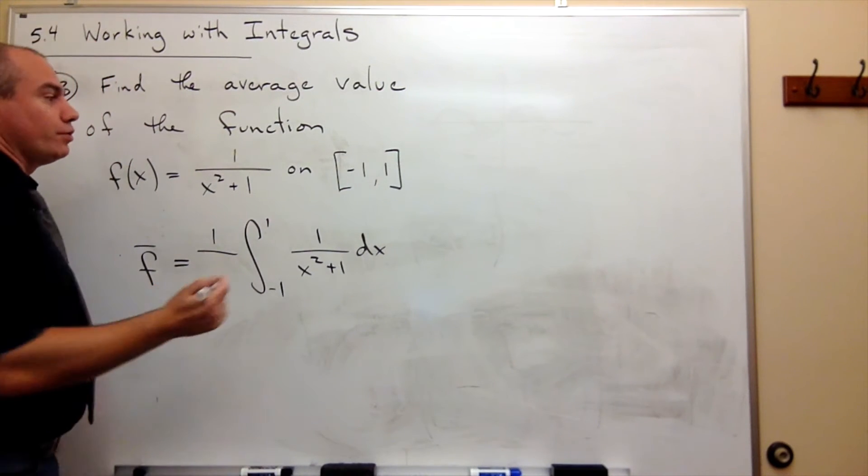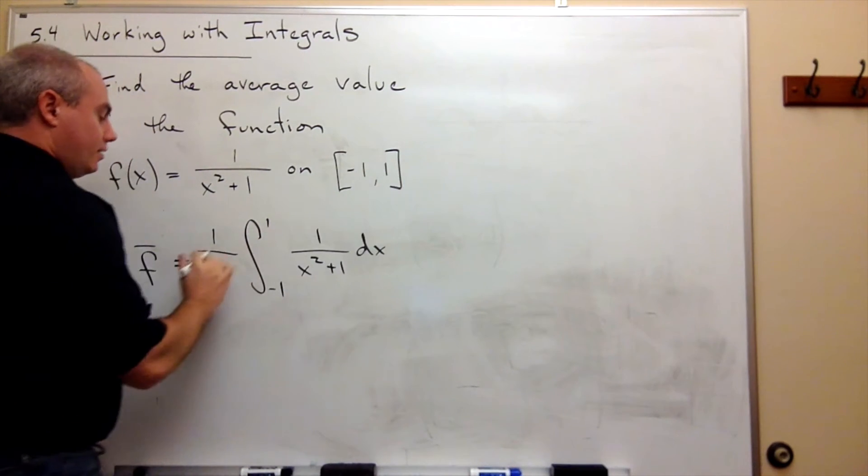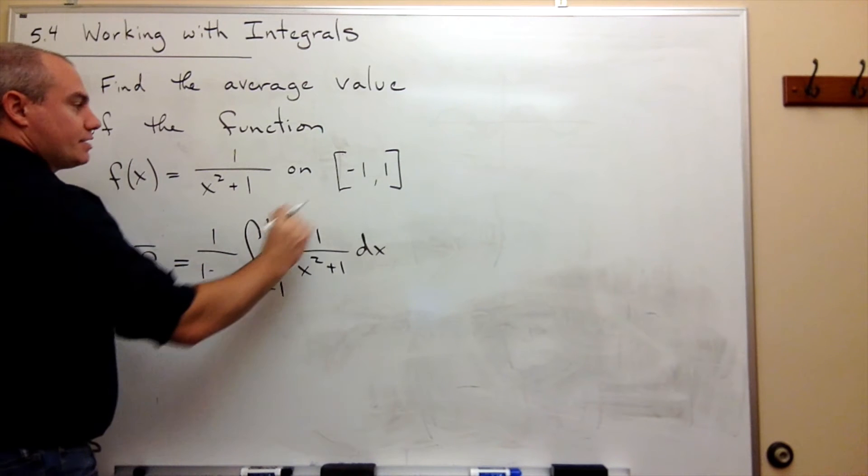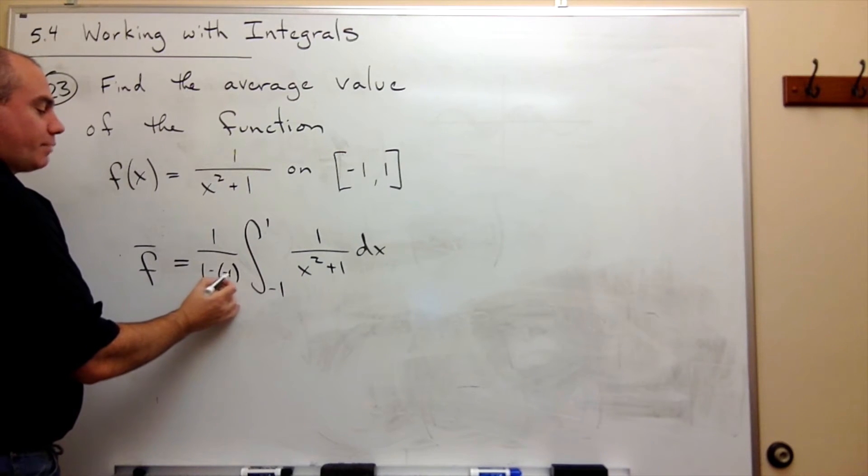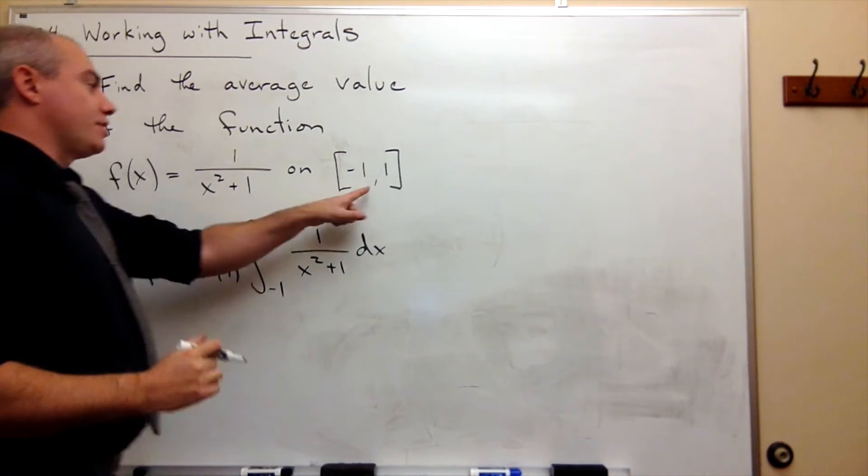so this is just going to be a 2, but if you prefer it's b, which is 1, minus a, which is negative 1. You can see that 1 minus negative 1 is 2, and that's just the length of this interval.